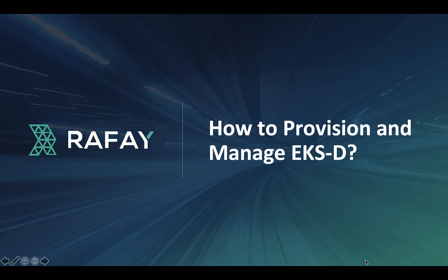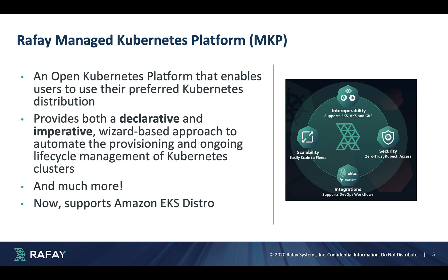So, how do you provision and manage Amazon EKSD-based Kubernetes clusters? This is where Rafi's managed Kubernetes platform can help. Rafi MKP is an open Kubernetes platform that enables users to use their preferred Kubernetes distribution. MKP provides both a declarative as well as an imperative wizard-based approach to automate the provisioning and ongoing lifecycle management of Kubernetes clusters.